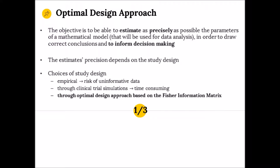The objective of the optimal design approach is to estimate as precisely as possible the parameters of a mathematical model — the model you are going to use to analyze the data — in order to draw correct conclusions and inform decision making. The precision of parameter estimates depends on the study design. You can choose the study design empirically, but you risk collecting uninformative data, especially when the model is complex and sampling time selection is not straightforward. It can be done through clinical trial simulation, but that can be time consuming, or through optimal design based on the Fisher information matrix.